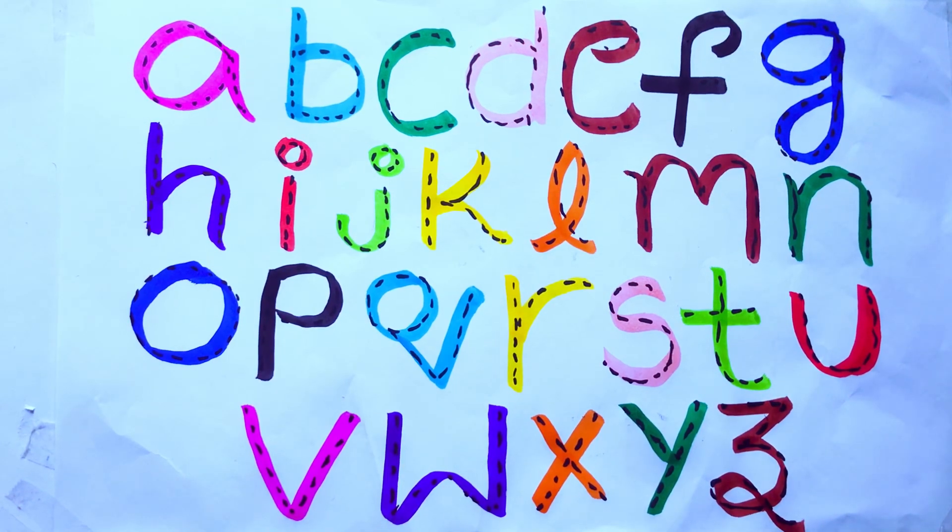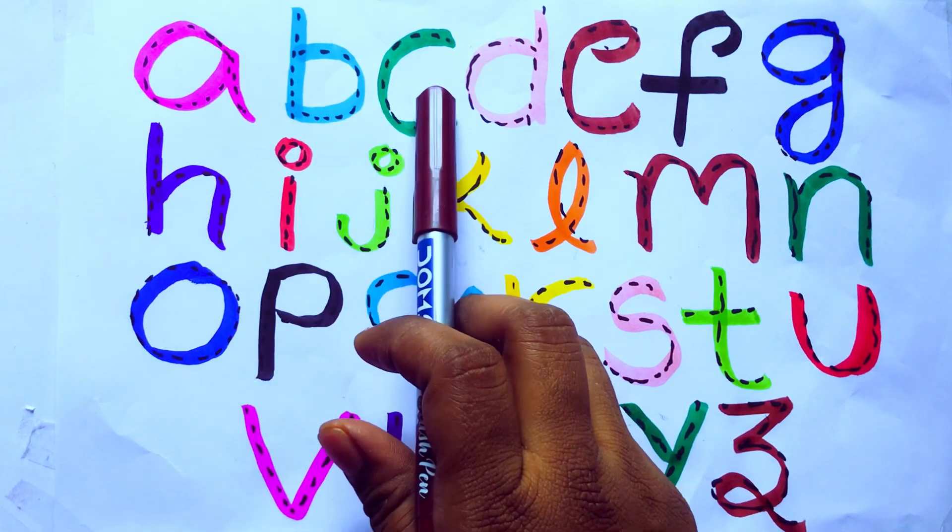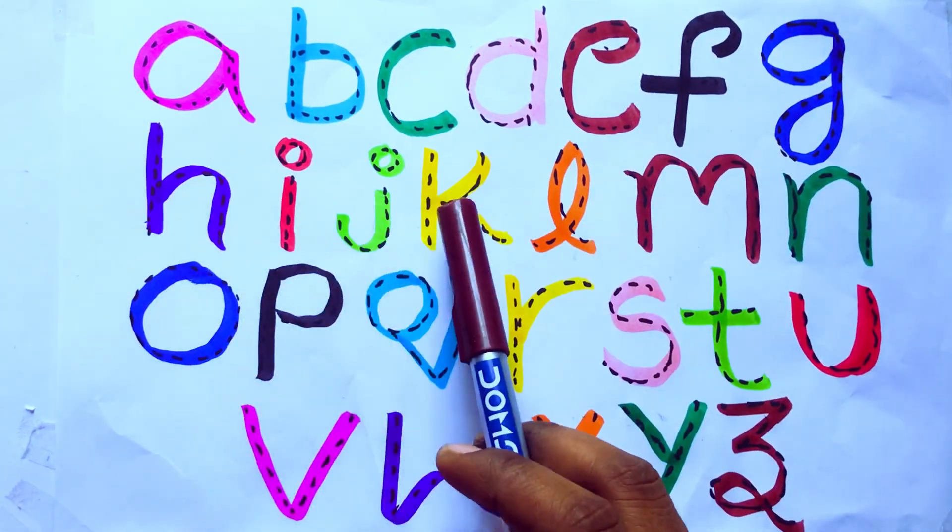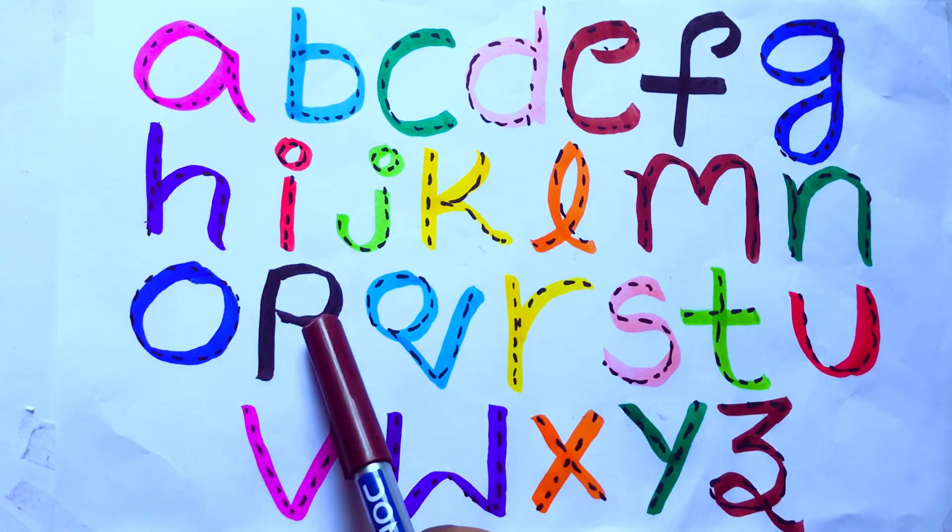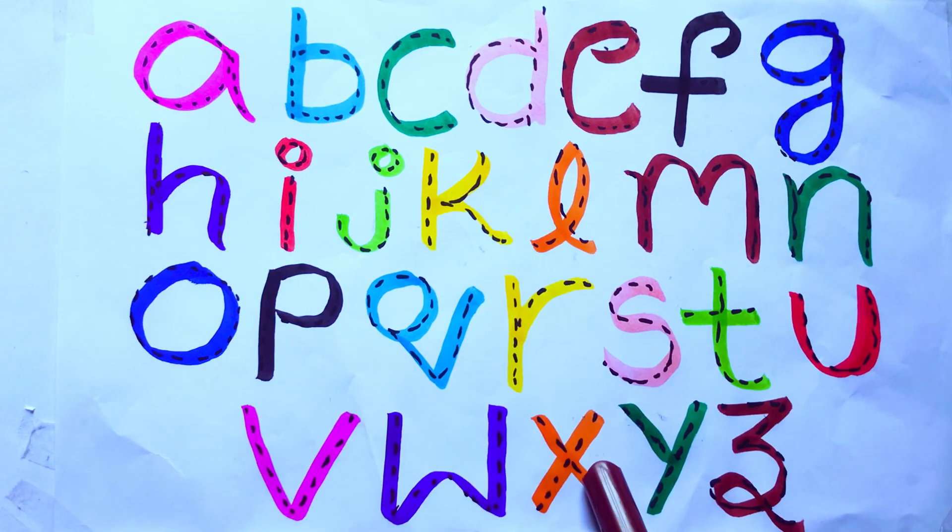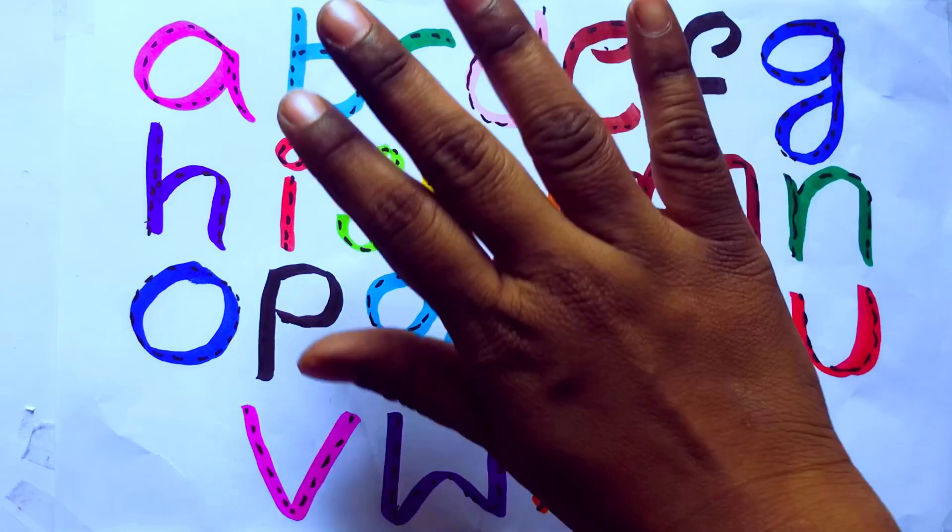Once again learning alphabets. A, B, C, D, E, F, G, H, I, J, K, L, M, N, O, P, Q, R, S, T, U, V, W, X, Y, Z. Okay, bye kids.